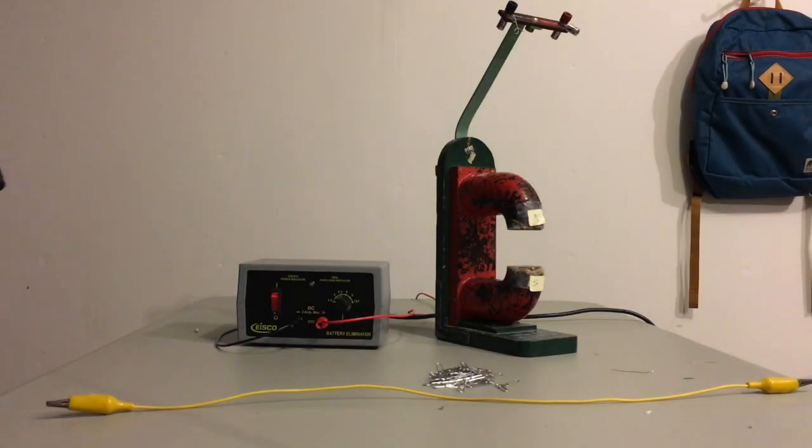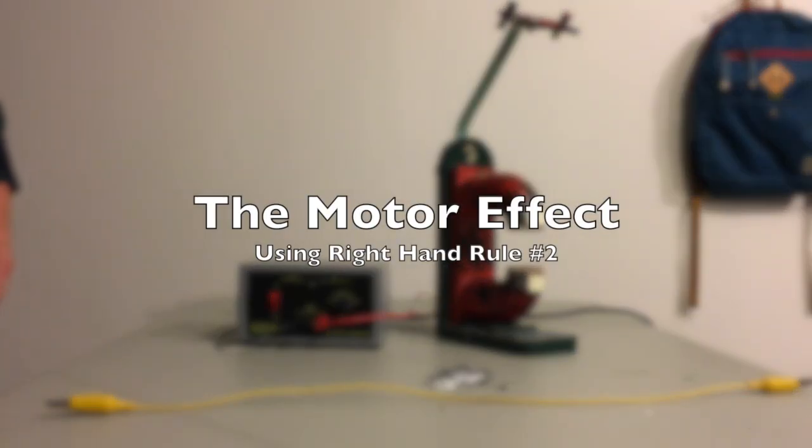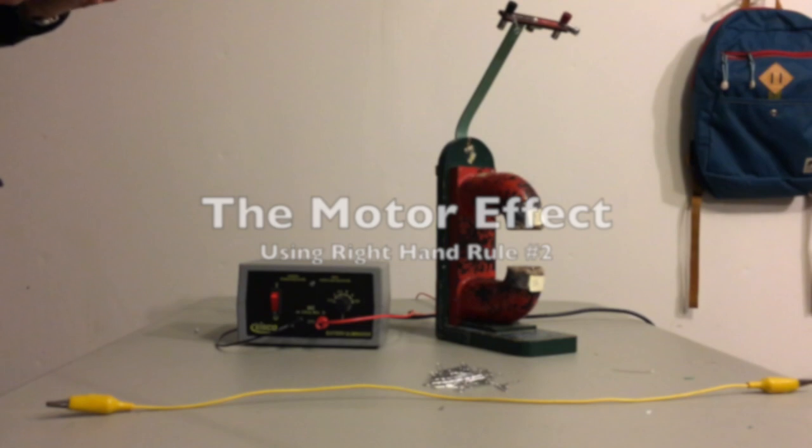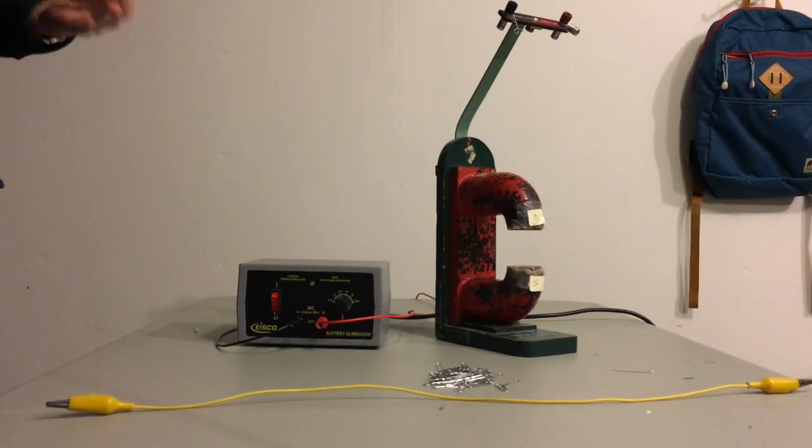Hey folks, it's Mr. Woodward showing you a demonstration of what's called the motor effect, which illustrates right-hand rule number two that relates the directions of magnetic fields, electric current, and magnetic force.